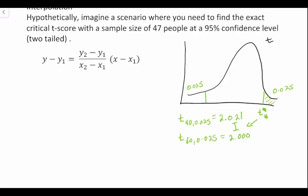What we're looking for here is: t at 46 degrees of freedom minus t at 40 degrees of freedom is equal to (t at 60 degrees of freedom minus t at 40 degrees of freedom) divided by (60 degrees of freedom minus 40 degrees of freedom) times (46 minus 40 degrees of freedom).